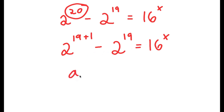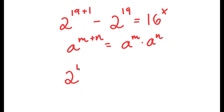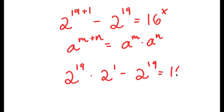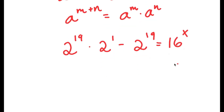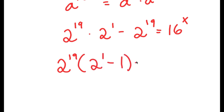If I have something in the form a to the power of m plus n, this is equal to a to the power of m times a to the power of n. So in this case, I have 2 to the power of 19 plus 1, and this equals 2 to the power of 19 times 2 to the power of 1. Now I have this minus 2 to the power of 19 is equal to 16 to the power of x. If I factor out 2 to the power of 19 from my left-hand side, I get 2 to the power of 19 times 2 to the power of 1 minus 1 is equal to 16 to the power of x.